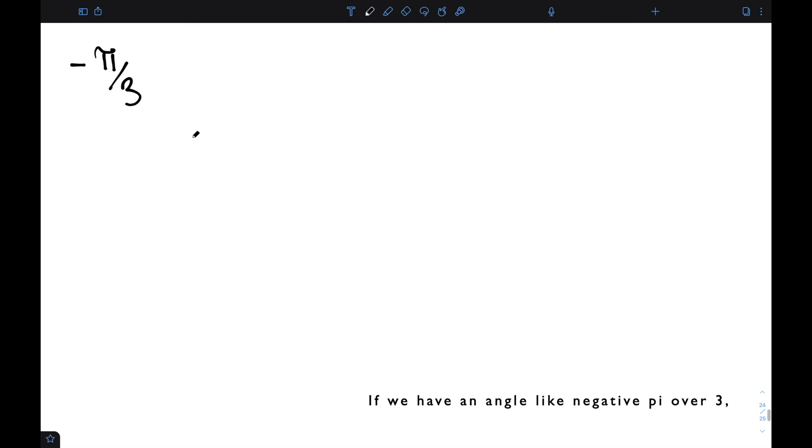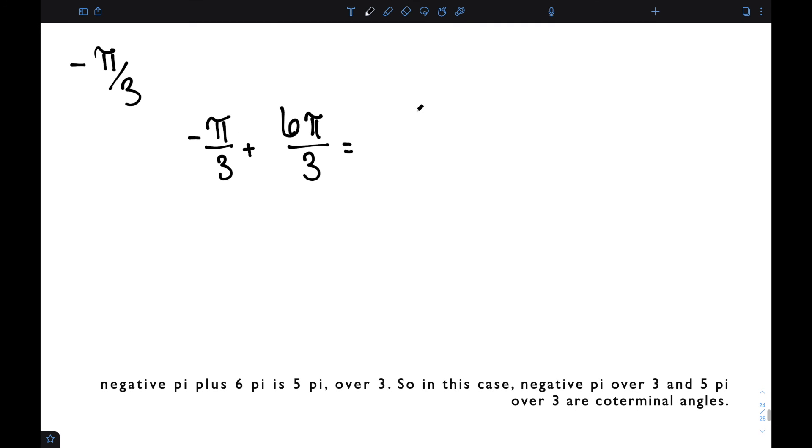If we have an angle like negative pi over 3, this time I would need to add a full rotation. I need to add a full 2 pi, which I'm going to write as 6 pi over 3. Negative pi plus 6 pi is 5 pi over 3. So in this case, negative pi over 3 and 5 pi over 3 are coterminal angles.